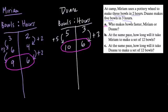And they say at the same pace. In other words, keep this relationship proportional - they're always making that number of bowls for that number of hours. How long will it take Miriam to make a set of twelve bowls? We just keep scaling this up. That's the basic idea. So we go up again, and that would be eight, and then ten, and eventually twelve, up by groups of two hours.